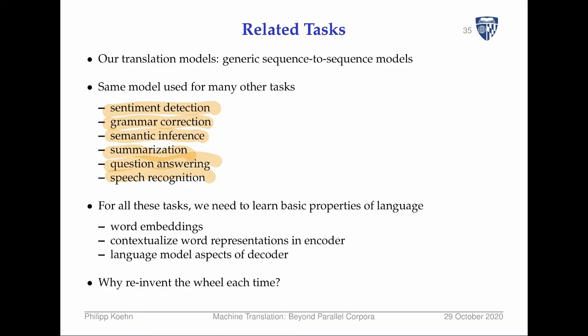For all these tasks, we need to learn basic properties of language — word embeddings, contextualized word representations in the encoder, and some kind of language model aspect in the decoder when generating output. So why reinvent the wheel? Instead of dedicated training data for each task separately, you can build one model that does all these tasks or at least shares components across all tasks. This model learns general facts about language informed by the different tasks, which are useful across all tasks.